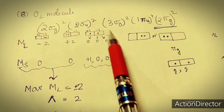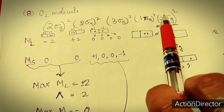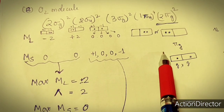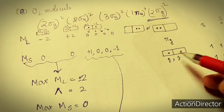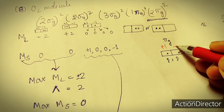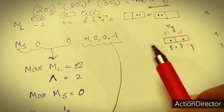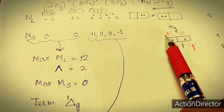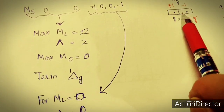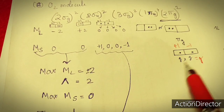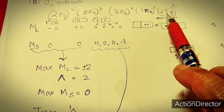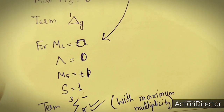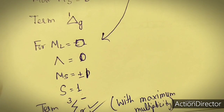For heteronuclear diatomic molecules, G or U labels are not used. For CO, the last electrons are in 3σ². Lambda = 0, S = 0 (paired electrons), giving multiplicity 1. Since it is a sigma orbital, the sign is plus. G/U is not used for heteronuclear species. The ground state term for CO is ¹Σ⁺.